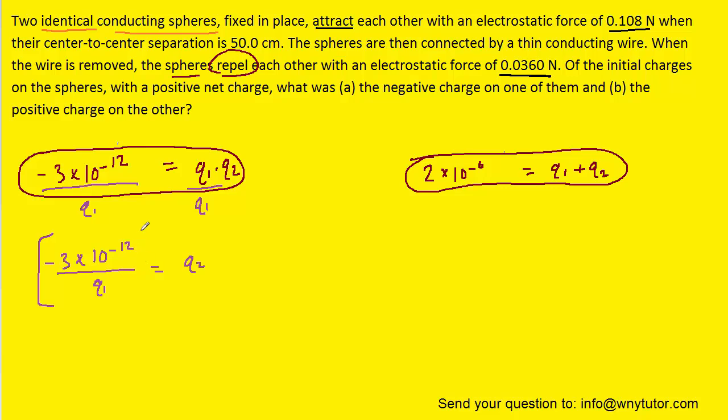We can now take that result for q2 and use the substitution method, whereby we plug it in to the other equation for q2. Notice that this plus and this minus can combine to just form a minus.